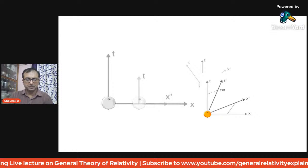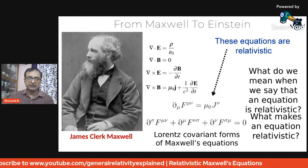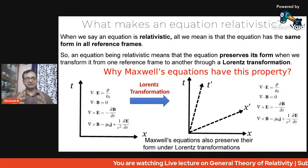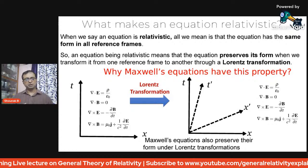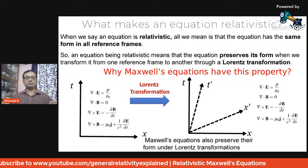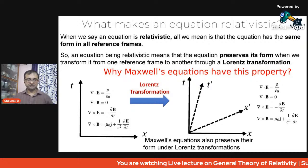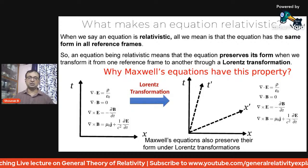Hence we can say that Maxwell's equations also preserve their form under Lorentz transformation — Maxwell's equations are Lorentz covariant. Technically, they go in line with the speed of light because Lorentz transformation confirms they are truly relativistic. We can see this: Maxwell's equations in a static frame, when we boost x to x-prime and t to t-prime, the equations remain exactly the same — one, two, three, four remains one, two, three, four — in spite of the boost.